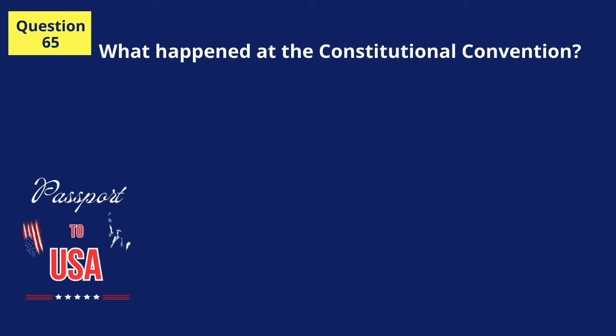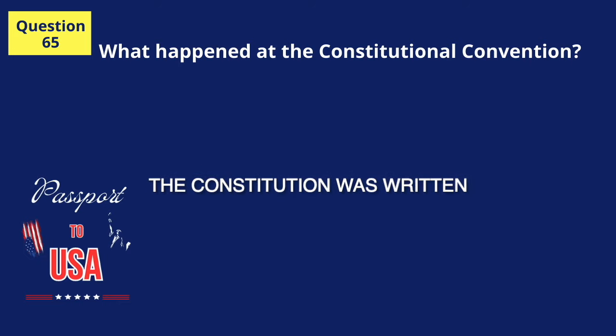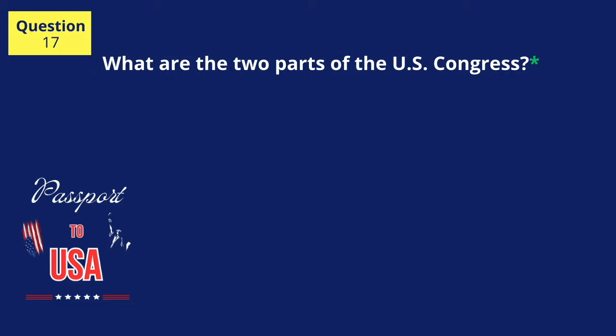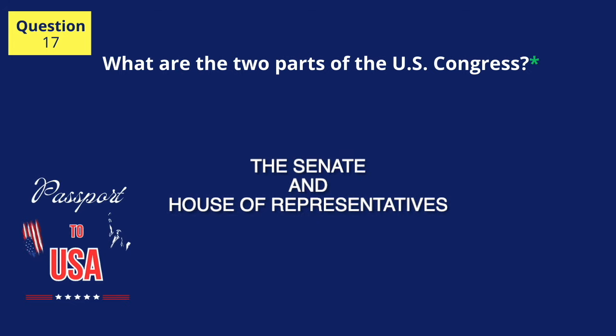What happened at the Constitutional Convention? The Constitution was written. What are the two parts of the U.S. Congress? The Senate and House of Representatives.